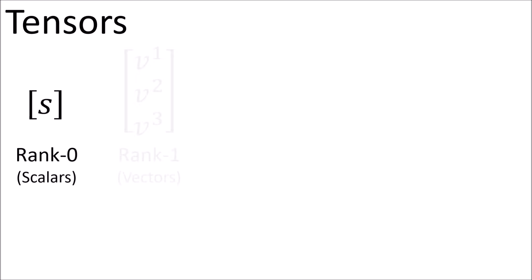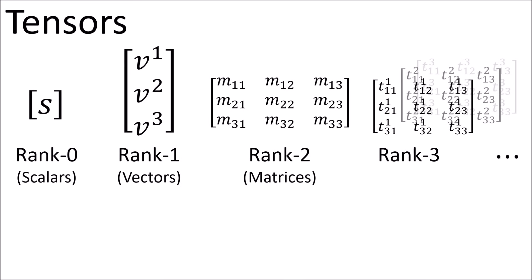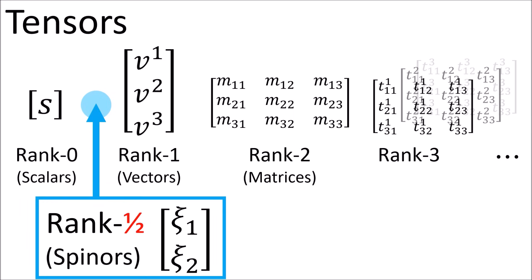So when looking at all the different ranks of tensors, we can think of spinors as fitting in right here. A spinor is sort of like a tensor of rank 1/2, because we can combine two spinors into a rank 1 tensor, and because spinors transform half as much as vectors do.